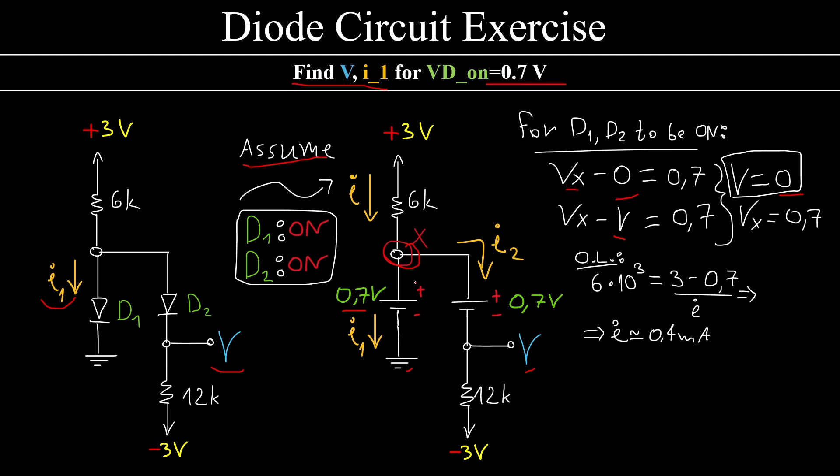Now, I'm going to take Ohm's law for this resistor and I'm going to say that 6kΩ times I equals 3 plus 3 minus 0.7V. The voltage here is 0.7V, over I. This means that I is 0.7mA.